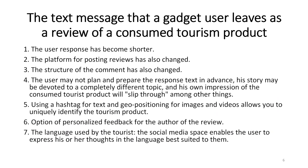The structure of the message that the user leaves via his gadget has changed from the classical message provided on platforms such as TripAdvisor or Booking.com. First of all, the message became shorter. There are limits in some social networks like Twitter on the number of symbols that can be used in a message. And there is also an unspoken rule: what doesn't fit on one screen of a smartphone will not be read.